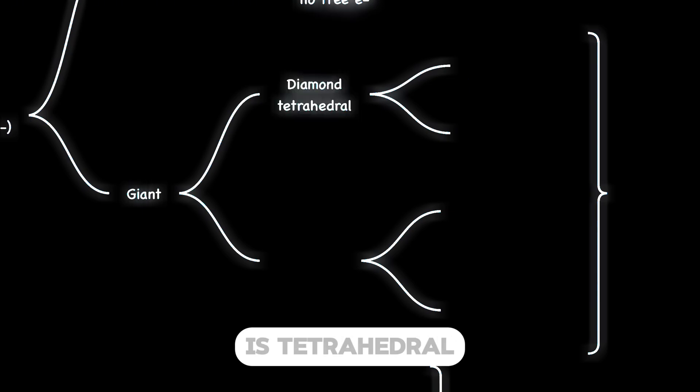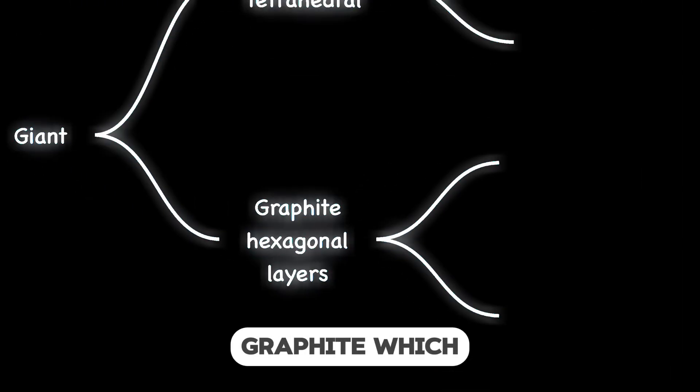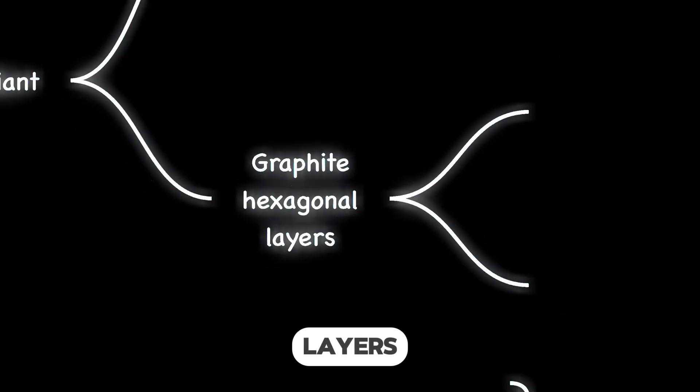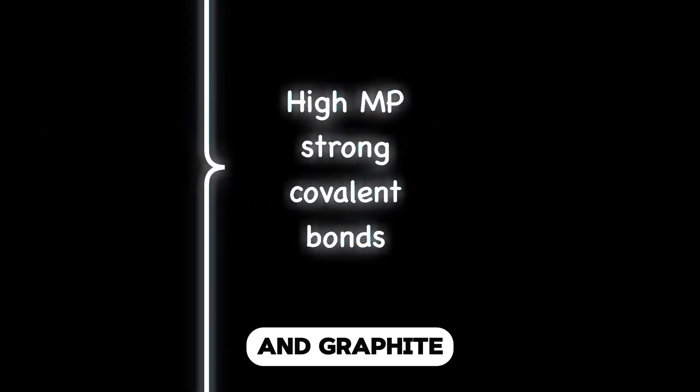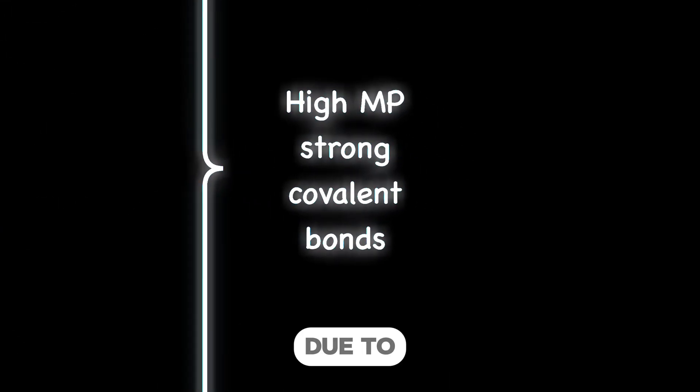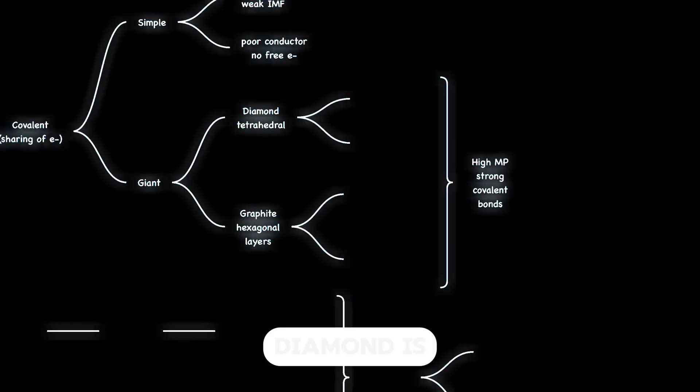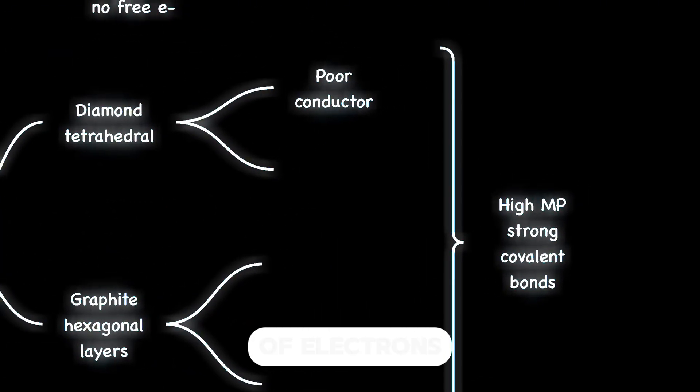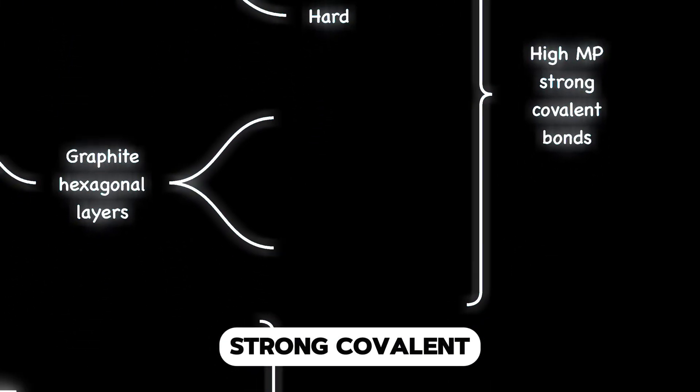First is diamond, which is tetrahedral. Second is graphite, which forms hexagonal layers. Both diamond and graphite have high melting points due to strong covalent bonds. Diamond is a poor conductor due to the lack of electrons. Diamond is hard due to the strong covalent bonds.